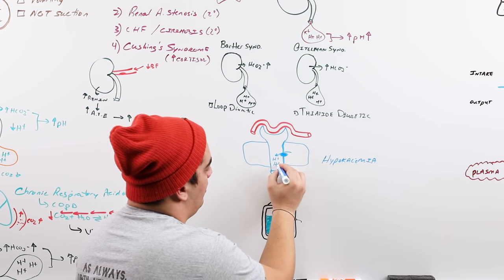For Bartter and Gitelman syndromes, the mechanism involves urinary sodium wasting, which stimulates aldosterone production secondarily. That aldosterone reabsorbs sodium, excretes potassium and protons, and causes metabolic alkalosis. Treatment involves aldosterone blockers — spironolactone or eplerenone — to oppose this secondary hyperaldosteronism.